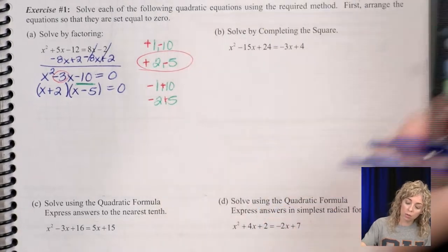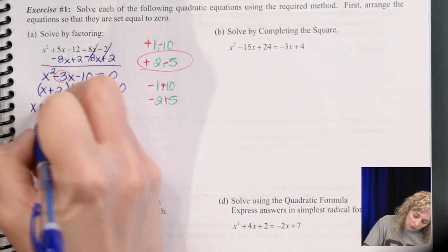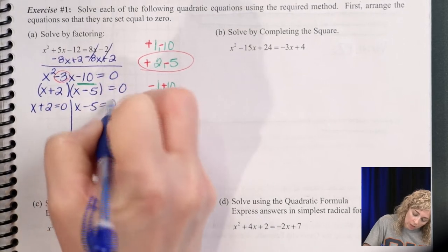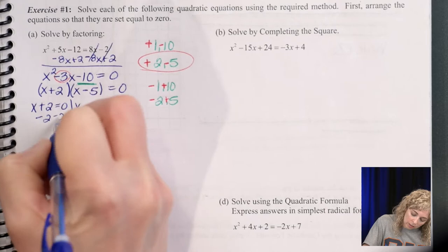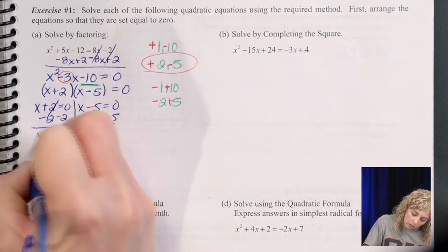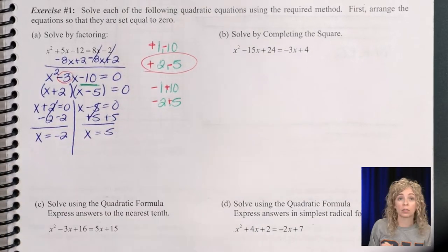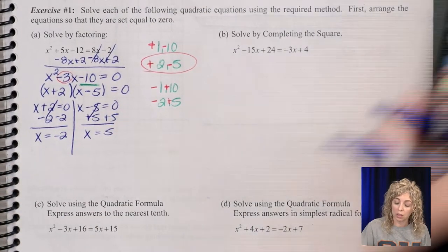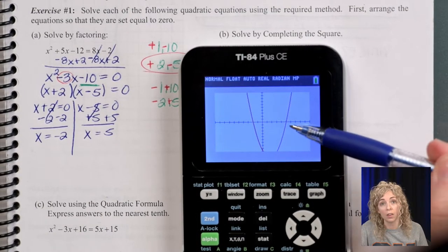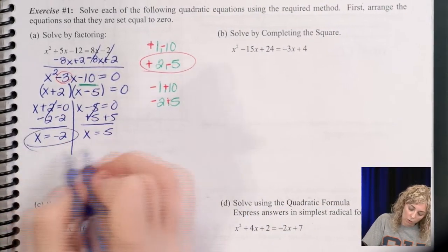Good. So now, once you've factored, you take each factor and set it equal to 0. Solve it for x. So x equals negative 2, x equals 5. And if we go back to the graph, we can see that it does cross the x-axis at negative 2 and 5. So those answers are right.